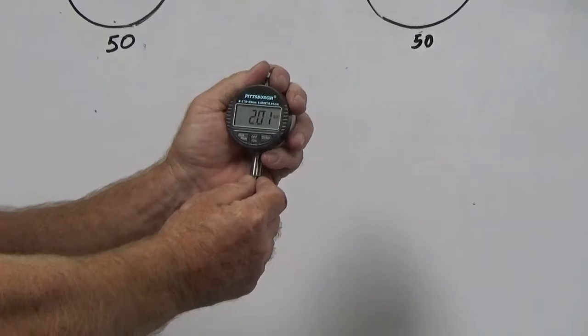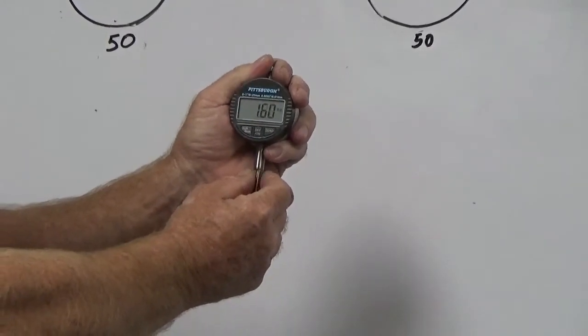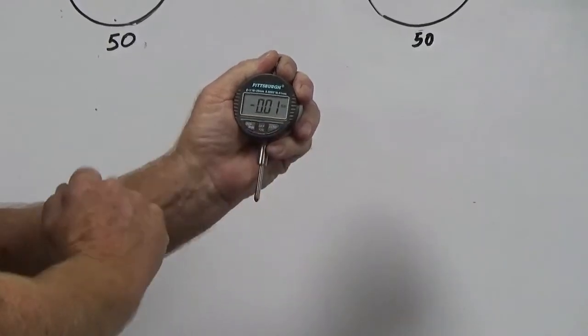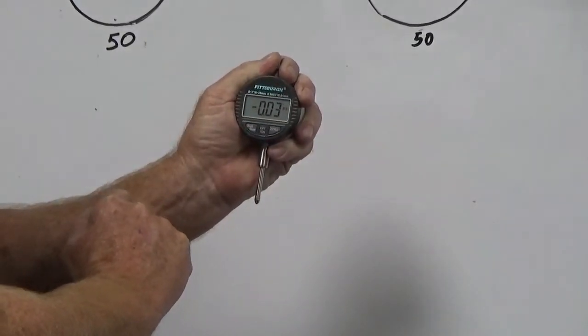At this point, once I set this, I want to zero it out, so I'm going to push my zero gauge. 0.00. That's how I zero it out.